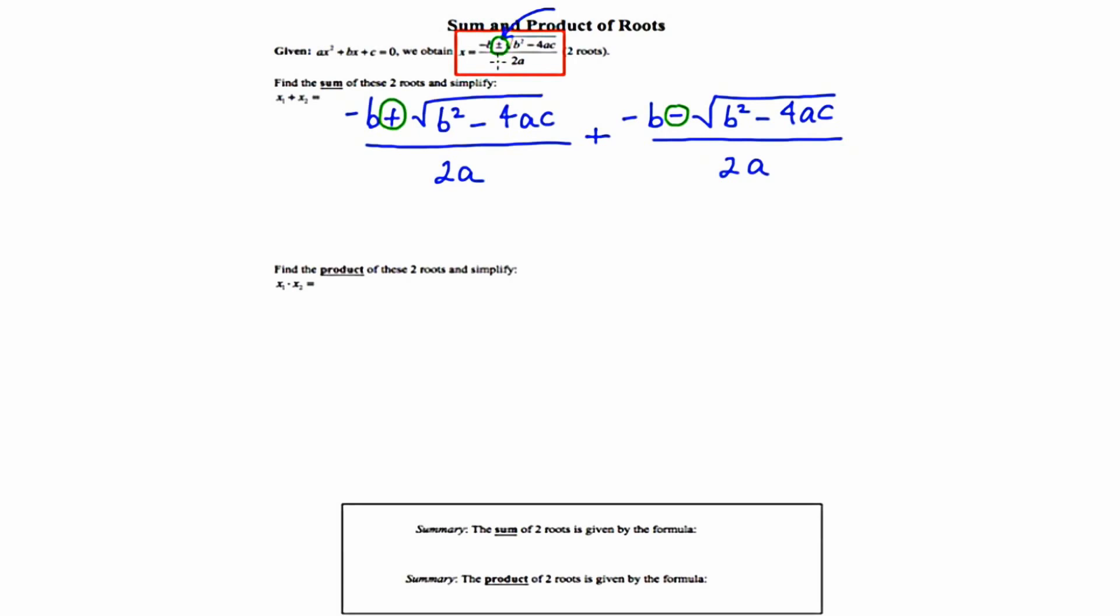We're going to add these two roots together, and we know that to add two fractions, we first have to have a common denominator. Luckily, we have that. We have a common denominator, and that denominator is 2a. So, I'm going to go ahead and rewrite that.